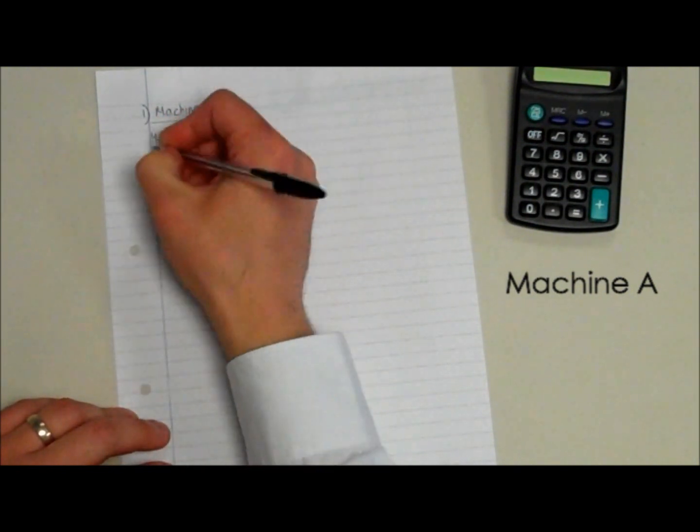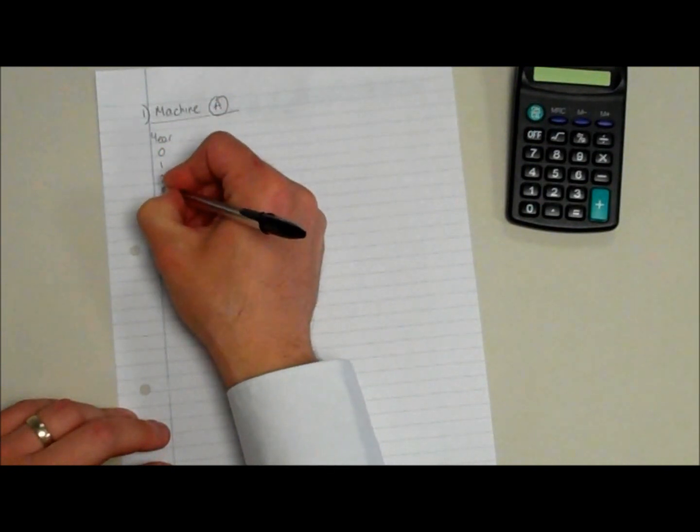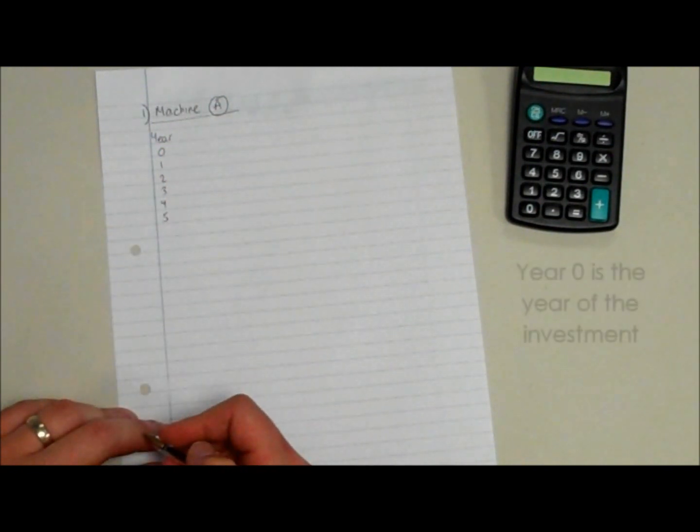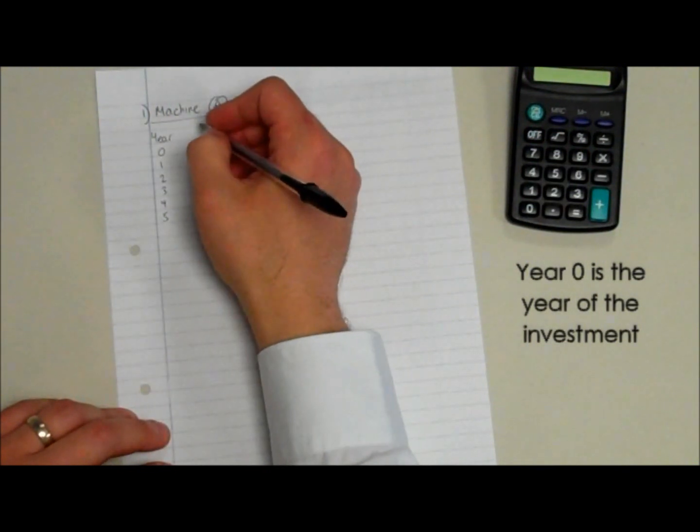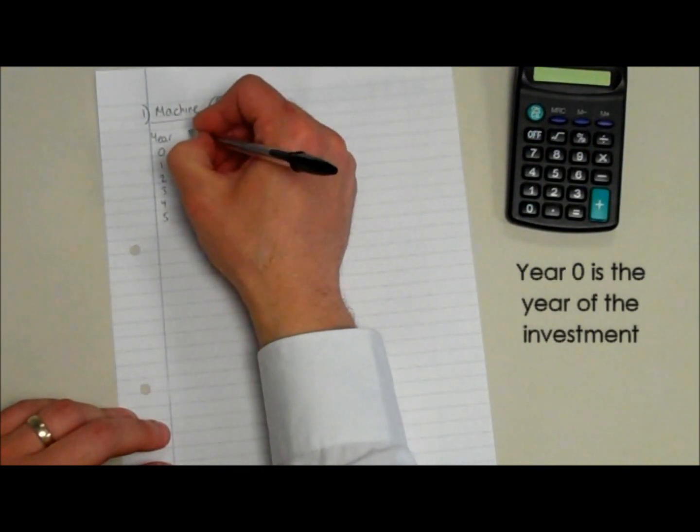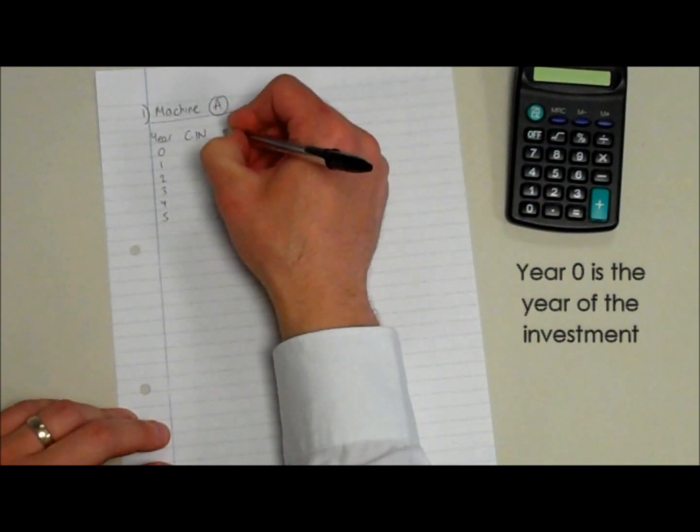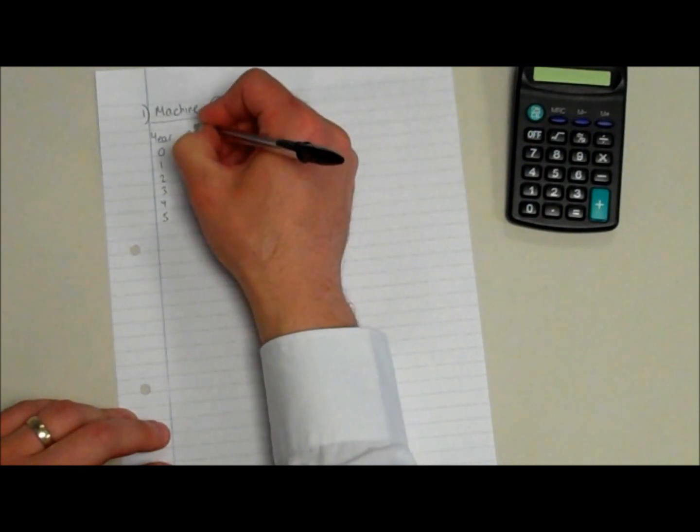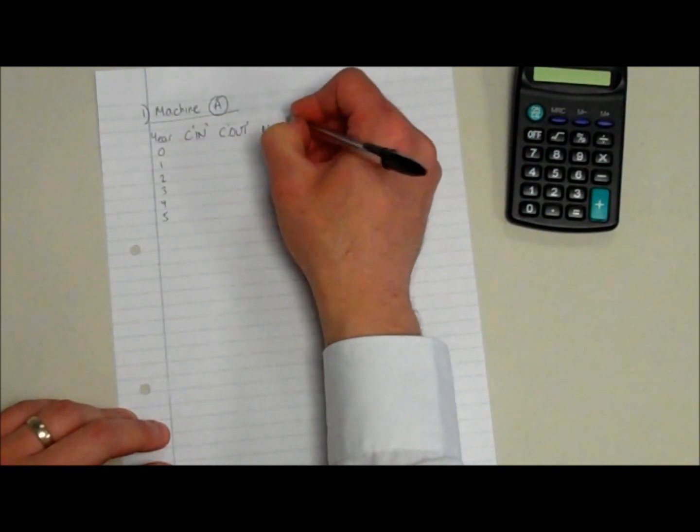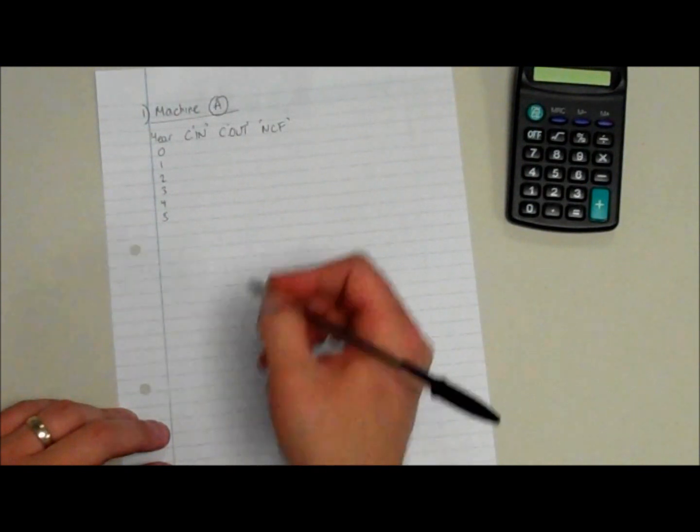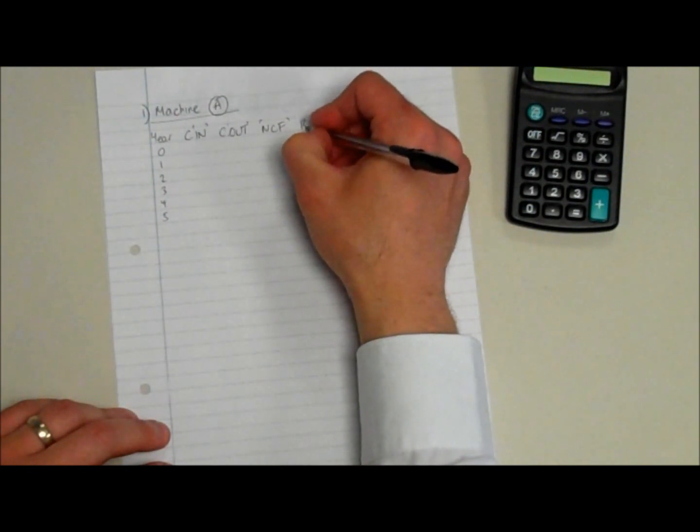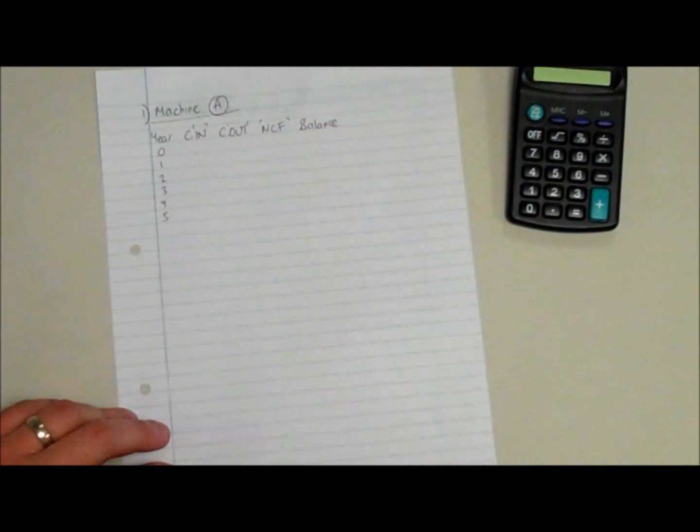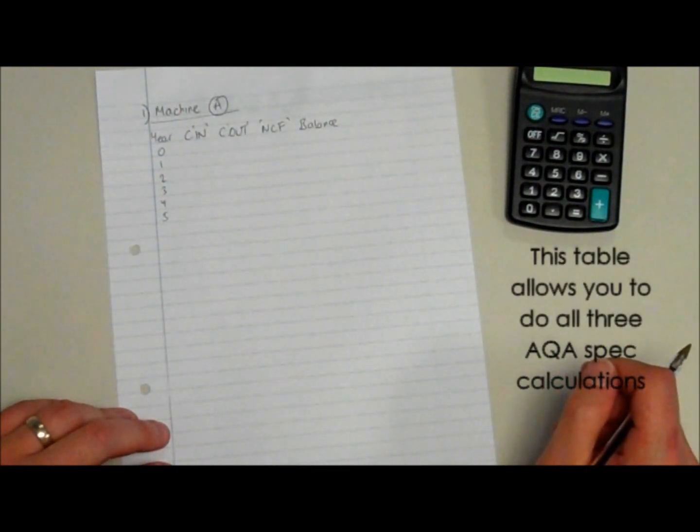The question was using investment appraisal, which of the options available to business would be the best to pursue. So it's an 18 mark question. I like doing a table. This information on the table is the year of the investment. Remember year zero because that's the year of the initial investment. Sometimes you get net cash flow given to you. In this case we have cash in and cash out flows, so we need to calculate our net cash flow. I'm leaving space on the end to calculate discount factors for net present value.